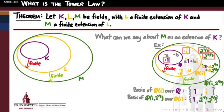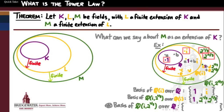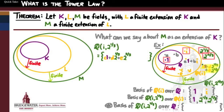We're comfortable that those are linearly independent — we proved that in a previous video. So now the question is: if we want to find a basis for M as an extension of K, the biggest field over the smallest field, we'd like to find it as explicitly as we can. A generic element of Q(i, ∛2) can be written as C times 1, plus D times the cube root of 2, plus E times 2^(2/3), where C, D, and E belong to the Gaussian rational field.